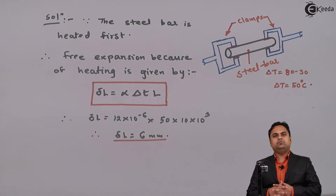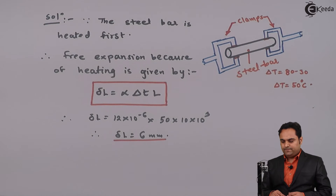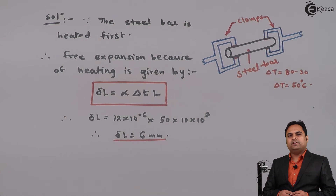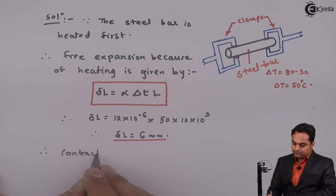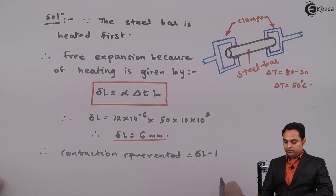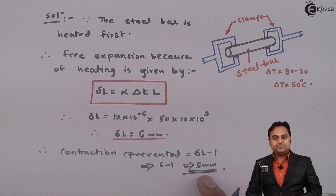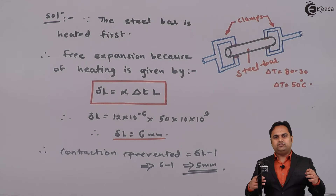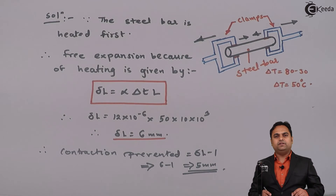After finding out the free expansion, this steel bar is allowed to contract. When it is allowed to contract, only 1 mm contraction is allowed. The free expansion is 6 mm, so the free contraction will also be 6 mm. But only 1 mm contraction is allowed, so the contraction prevented equals delta L minus 1 mm, which is 6 minus 1 = 5 mm. This contraction is prevented by clamps on both sides, which pull the rod outward, so preventing the contraction.